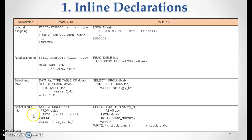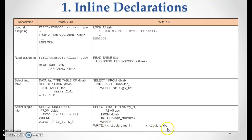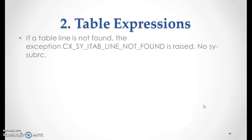Then select single into. Previously we declared LB_F1 and LB_F2 separately and wrote: select single into LB_F1 LB_F2. In the new syntax, we declare LS_STRUCTURE inline within the select statement: select single into data(LS_STRUCTURE), then use: write LS_STRUCTURE-MY_F1, LS_STRUCTURE-ABC. So within the select statement itself we declare the data of LS_STRUCTURE.